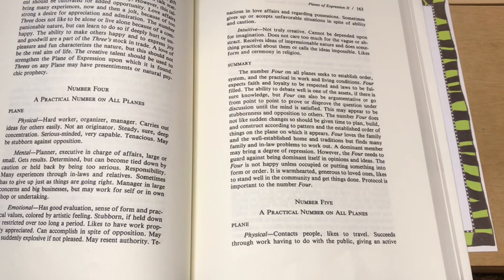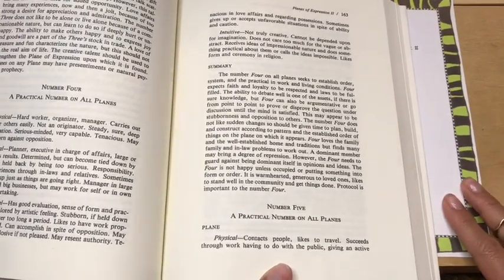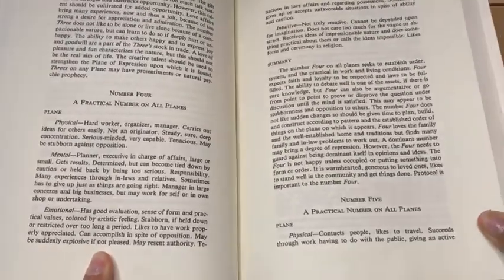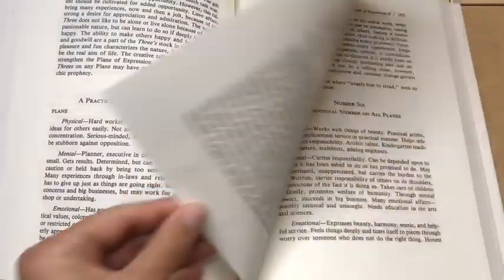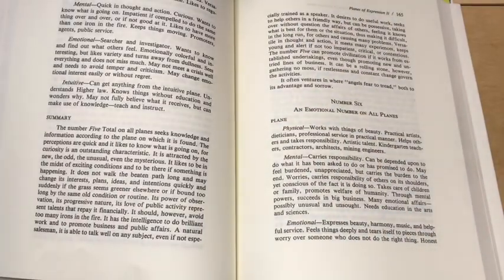And then we go, I think I have a number four. I got a four total on my intuitive plane. A four on a physical plane is a hard worker, organizer, manager, carries out ideas for others easily. A four mental is a planner, executive in charge of affairs, large or small, gets results. A four emotional has good evaluation, sense of form and practical values colored by artistic feeling. A four intuitive, not truly creative, cannot be depended upon for imagination. It does not care too much for the vague or abstract.